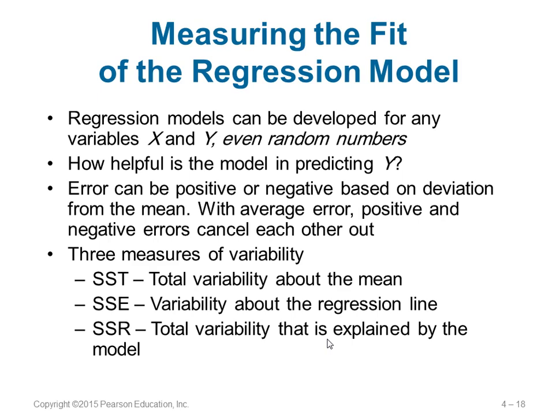A regression model can be developed for any variables, even random numbers. How do you know whether our prediction is useful or helpful? Errors can be positive or negative, and summation of errors may cancel out. So we have three measures to calculate variability: SST is variability about the mean, SSE is variability about the regression line, and SSR is the total variability explained by the model.